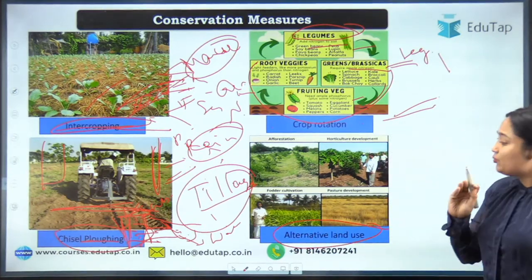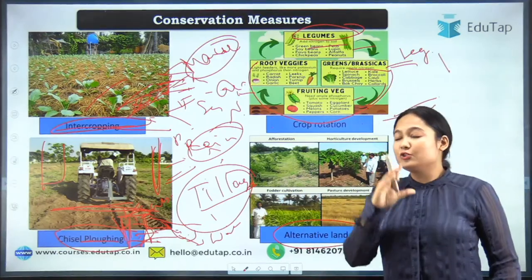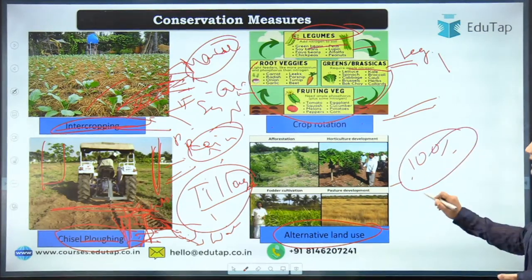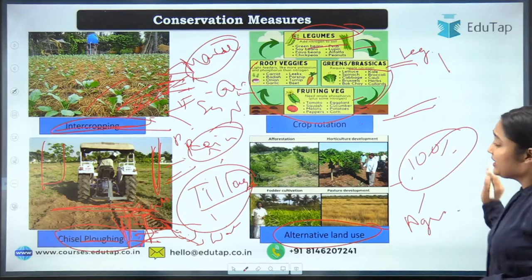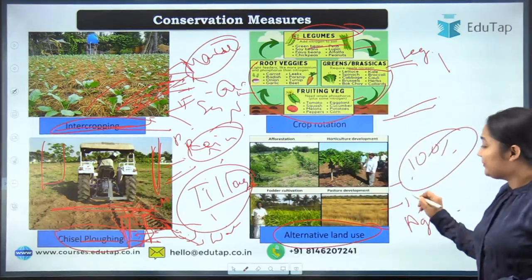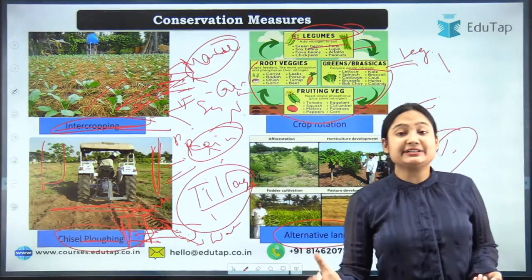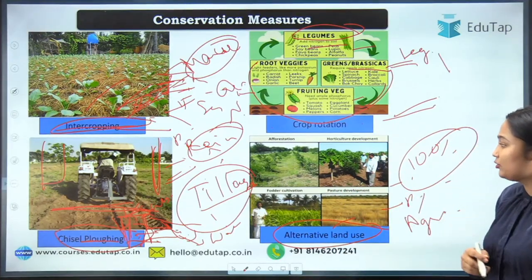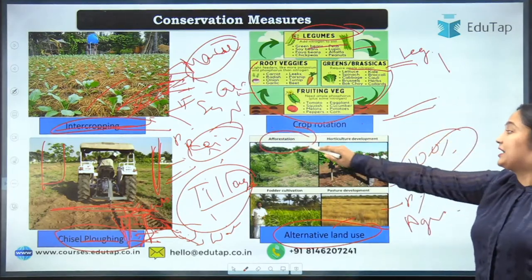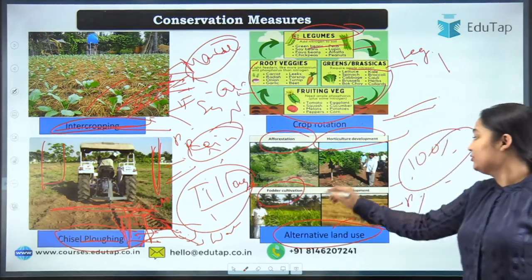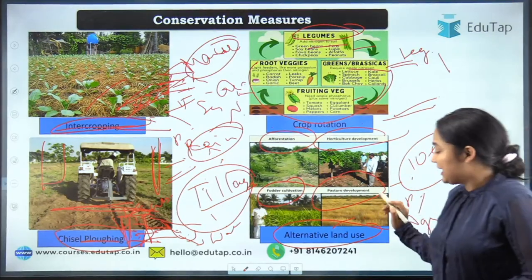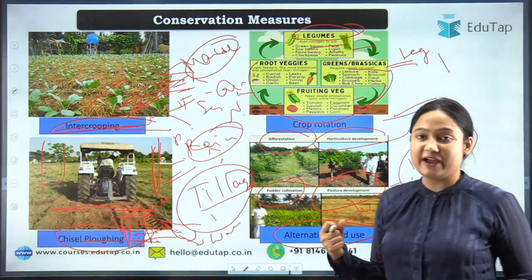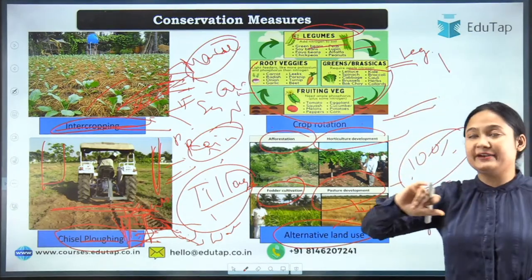Alternative land use is another conservation measure. No matter how many measures you apply, not all land is suitable for agriculture due to soil type or climatic conditions. For such land, you can go for alternative uses: planting forests, horticulture, water cultivation, pasture development, or preparing land for animal fodder production.